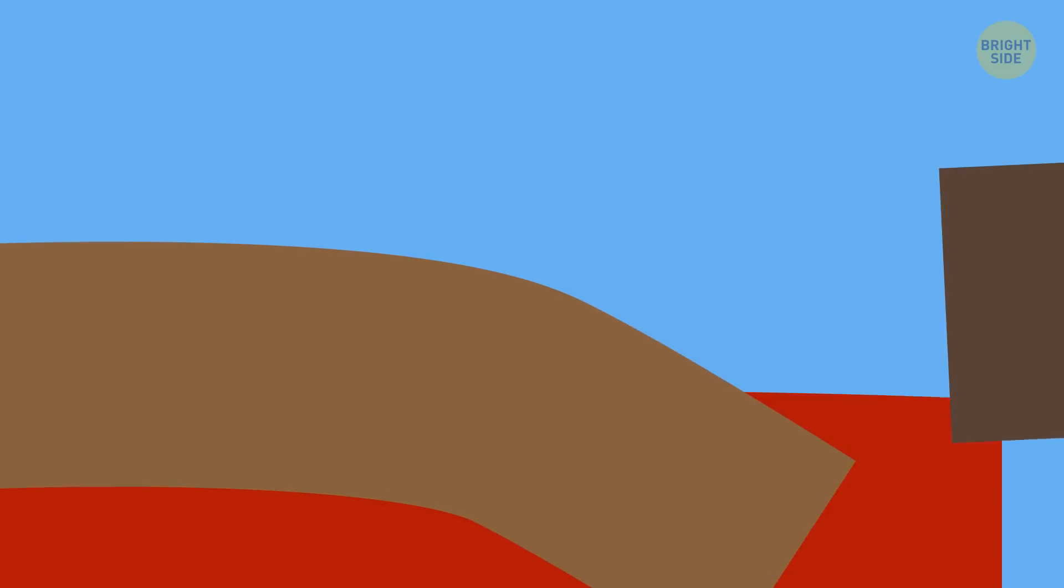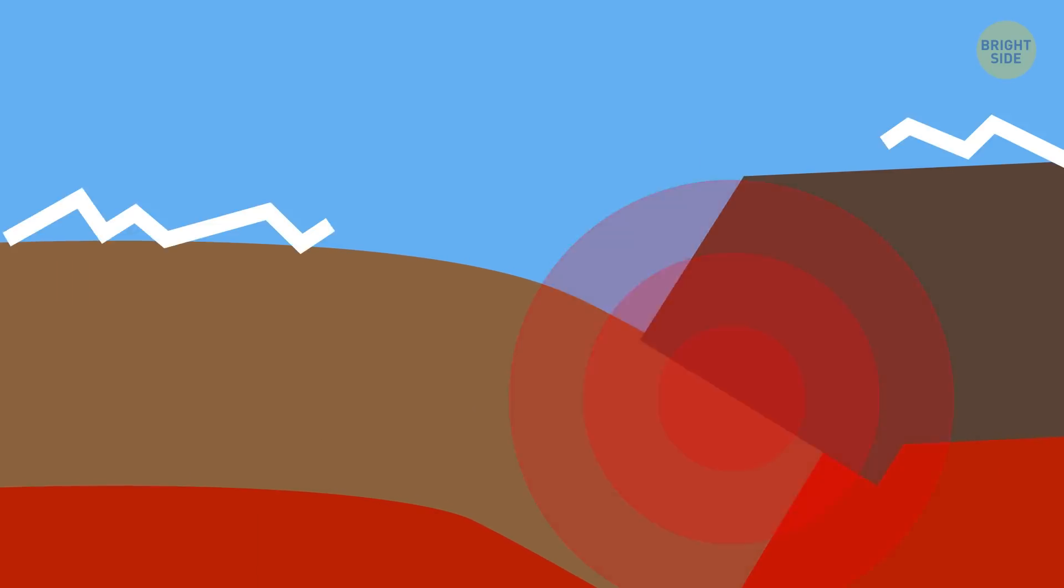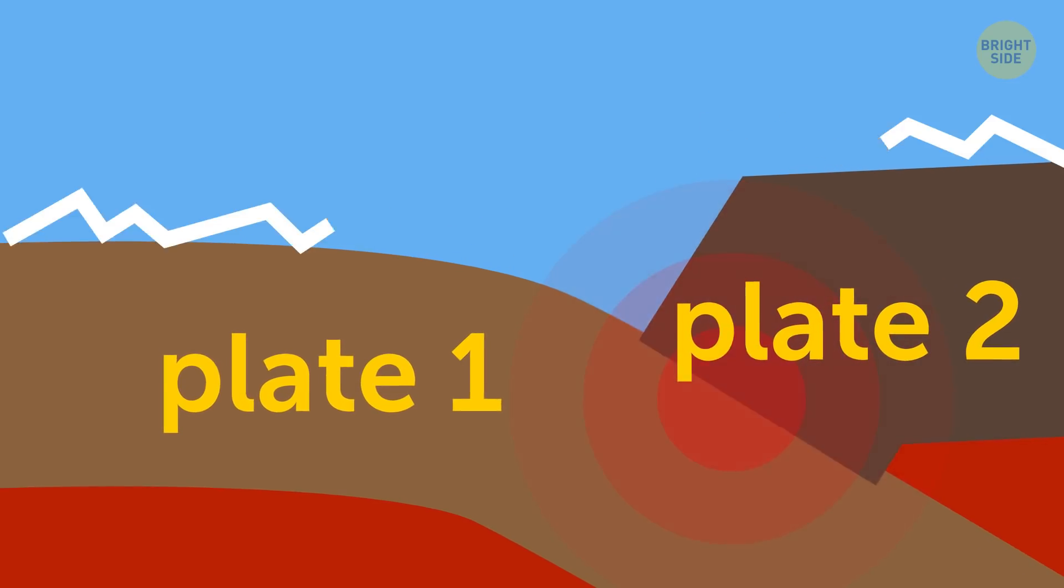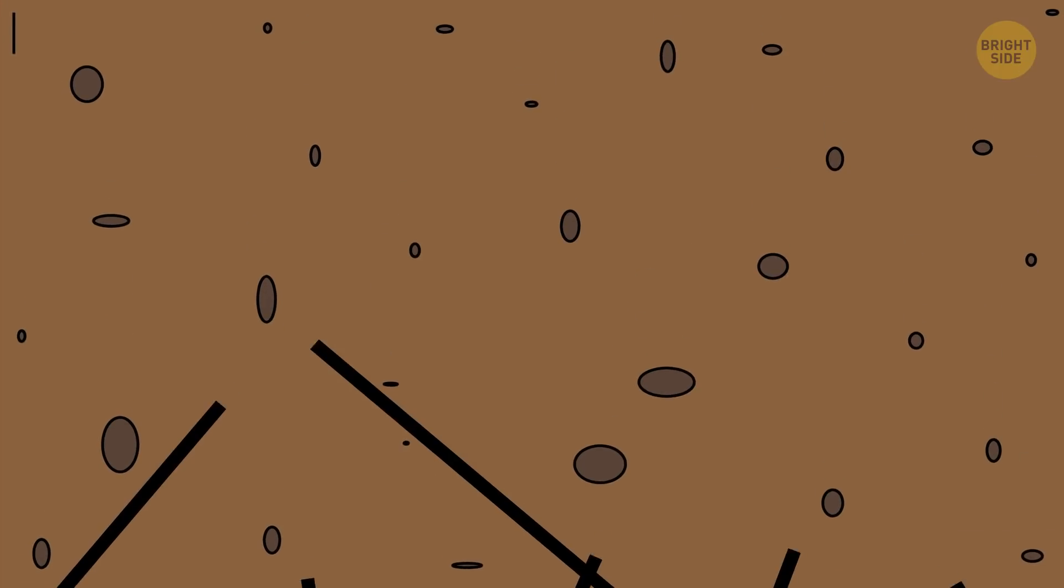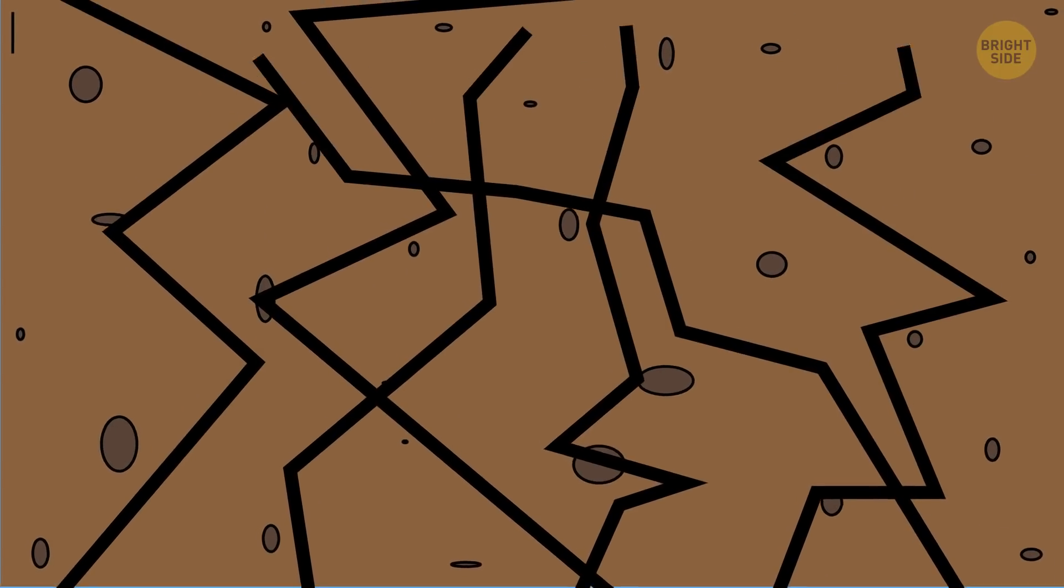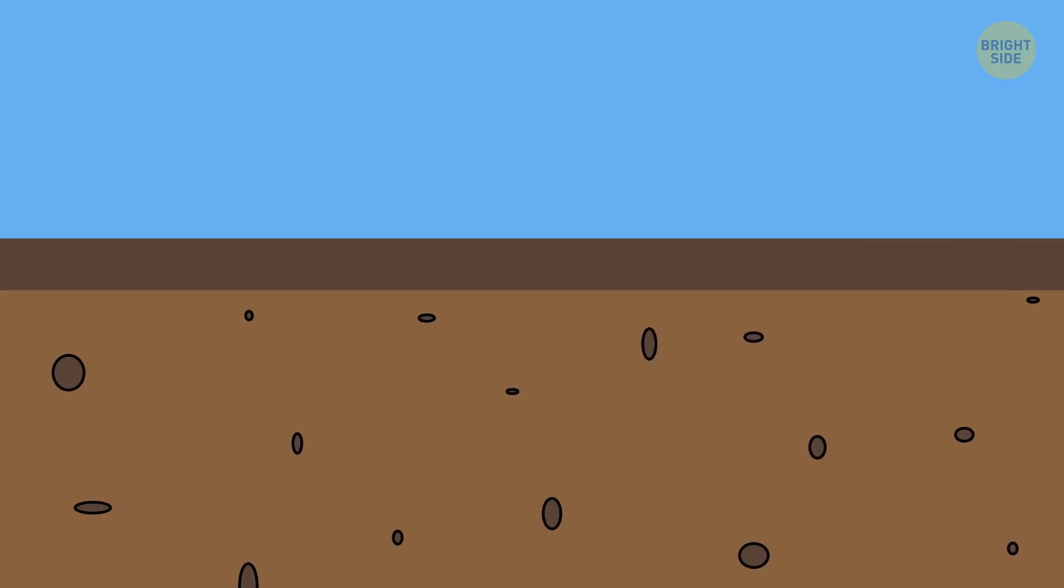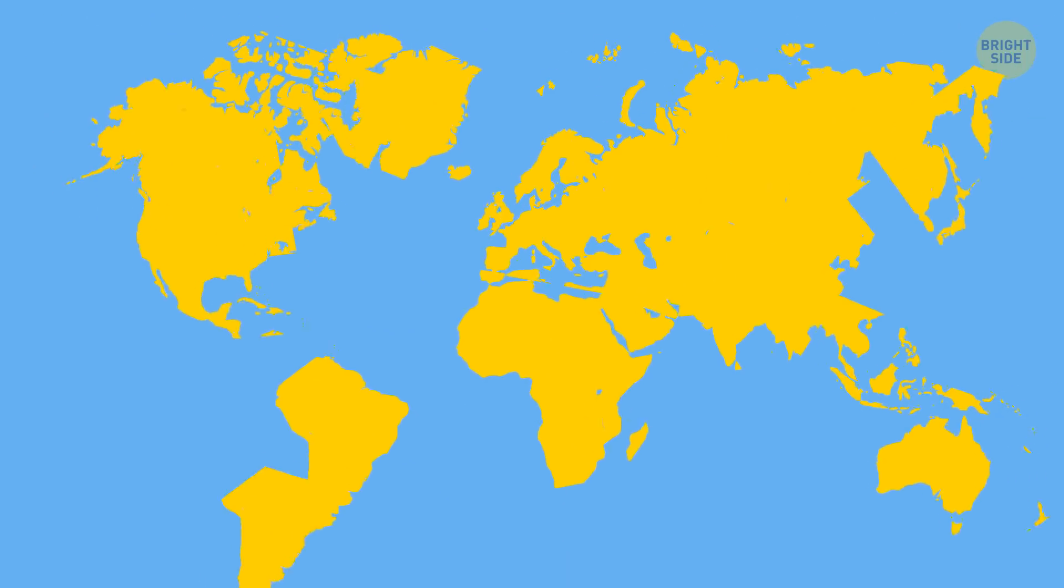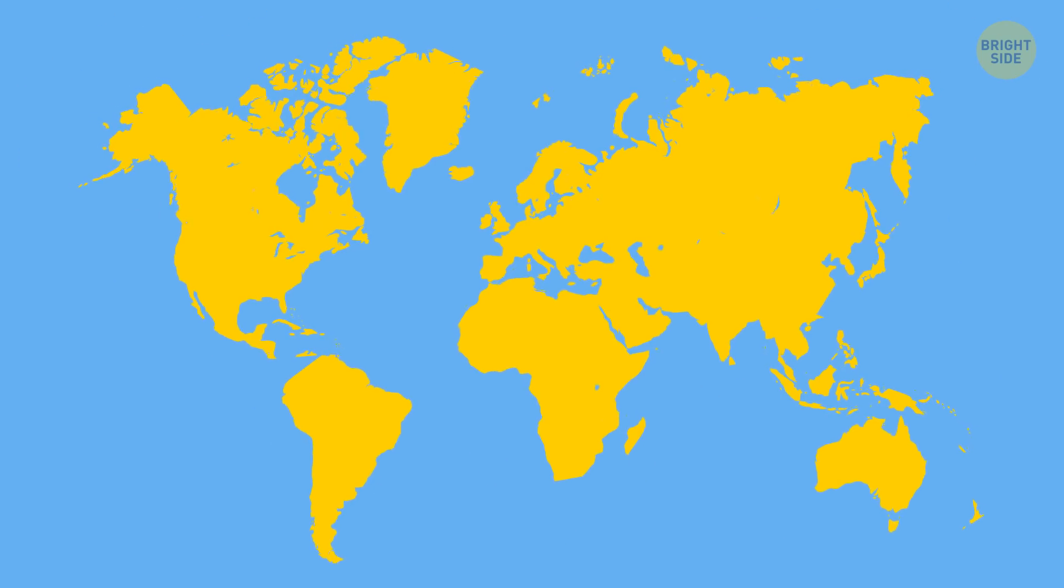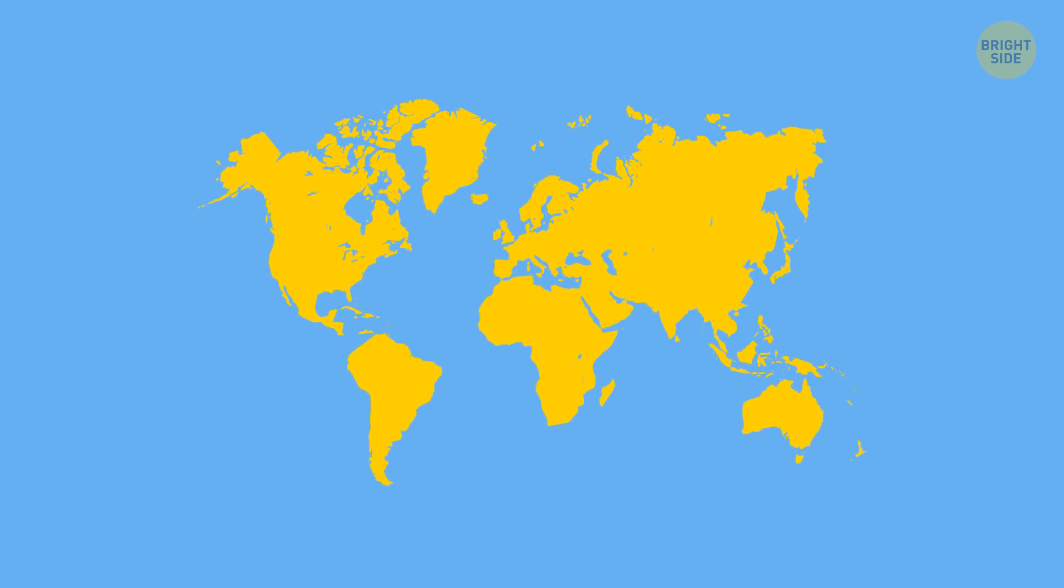You see, quakes happen when two tectonic plates meet, and one of them is forced underneath the other because of gravity and pressure. The area where this occurs is called the subduction zone, and it's basically a fracture, or a fault, in the Earth's rocky fundament. Now, can you imagine a tectonic plate? Remember those things in school? The big pieces that make up the puzzle that is our planet?